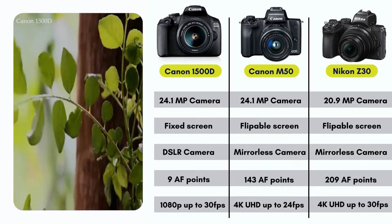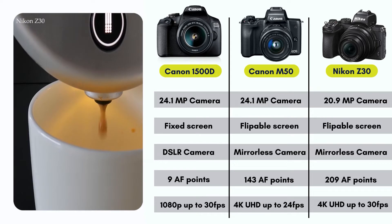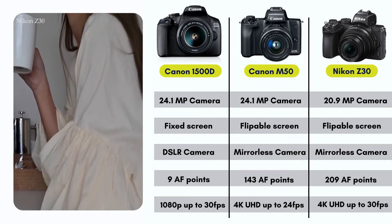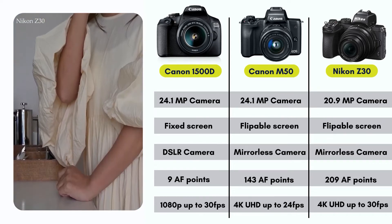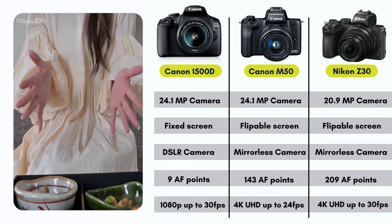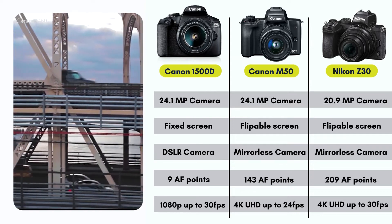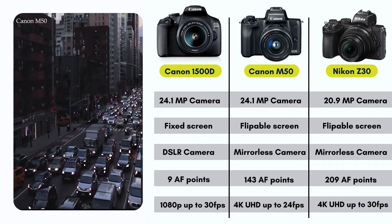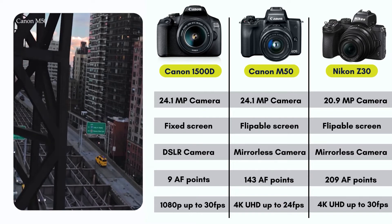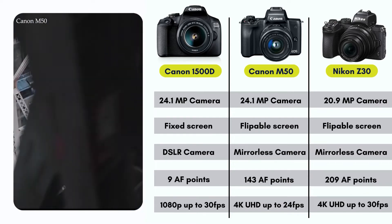In terms of resolution, the Canon 1500D can record 1080p up to 30 frames per second, the Canon M50 can record 4K Ultra HD up to 24 frames per second, and the Nikon Z30 can record 4K Ultra HD up to 30 frames per second. Overall, there is not much difference between DSLR and mirrorless camera quality, and you should go for the one which suits your budget.